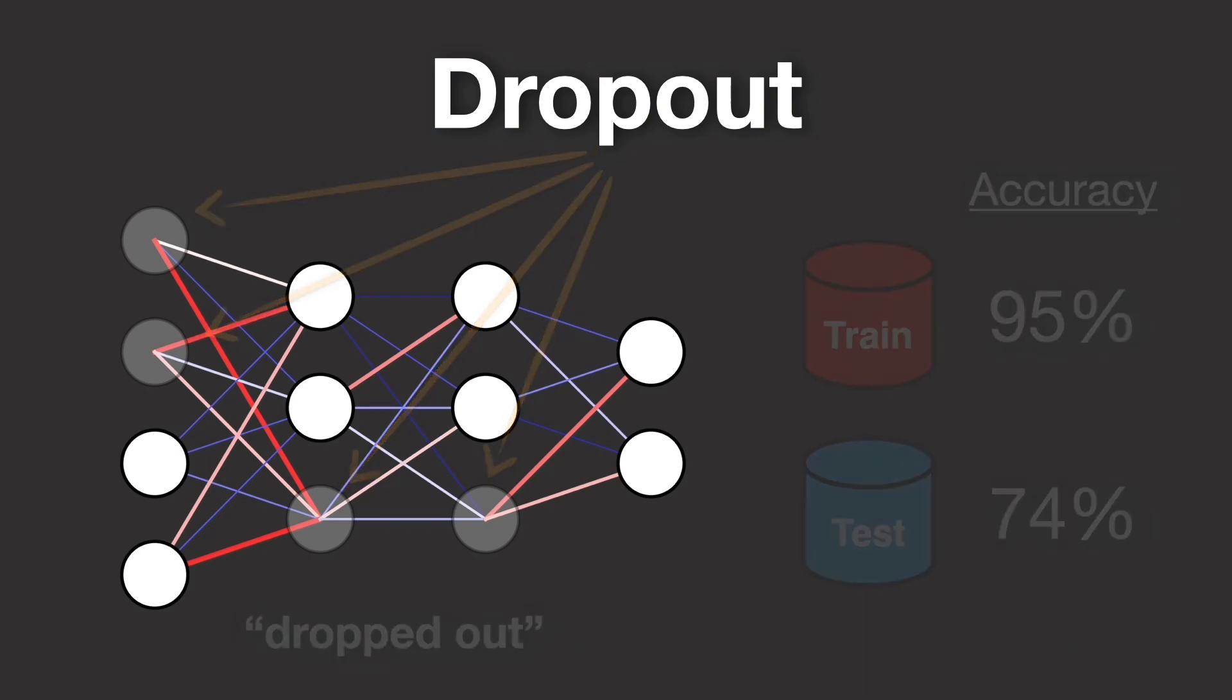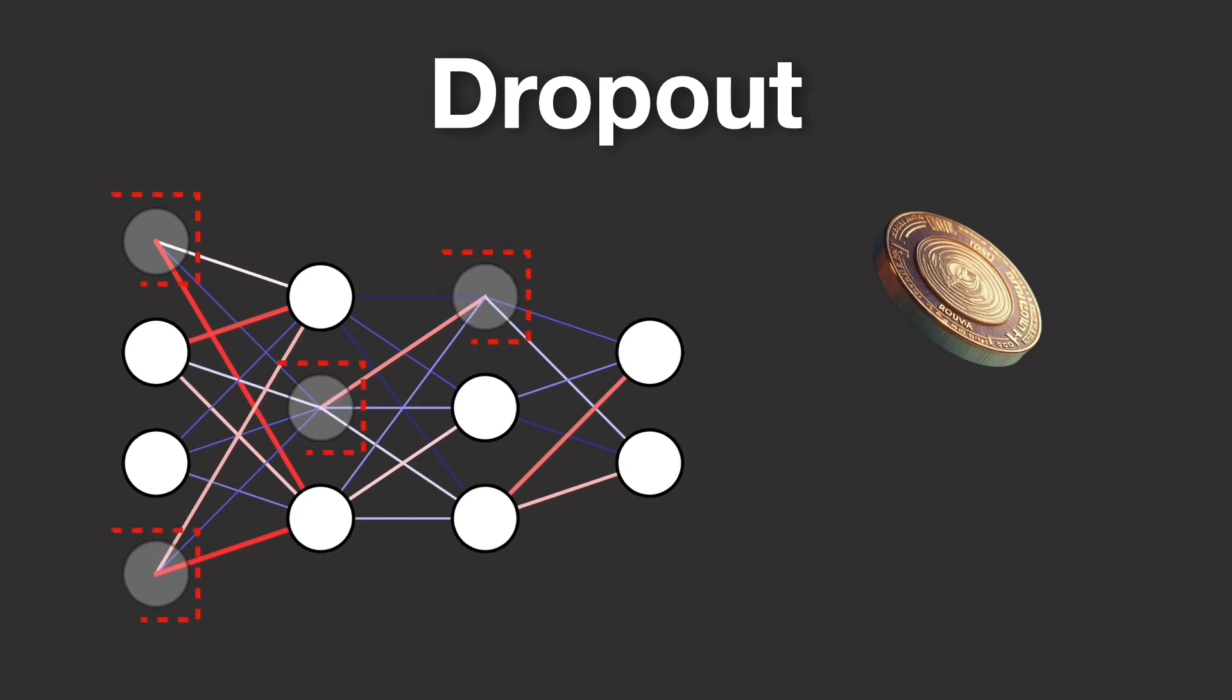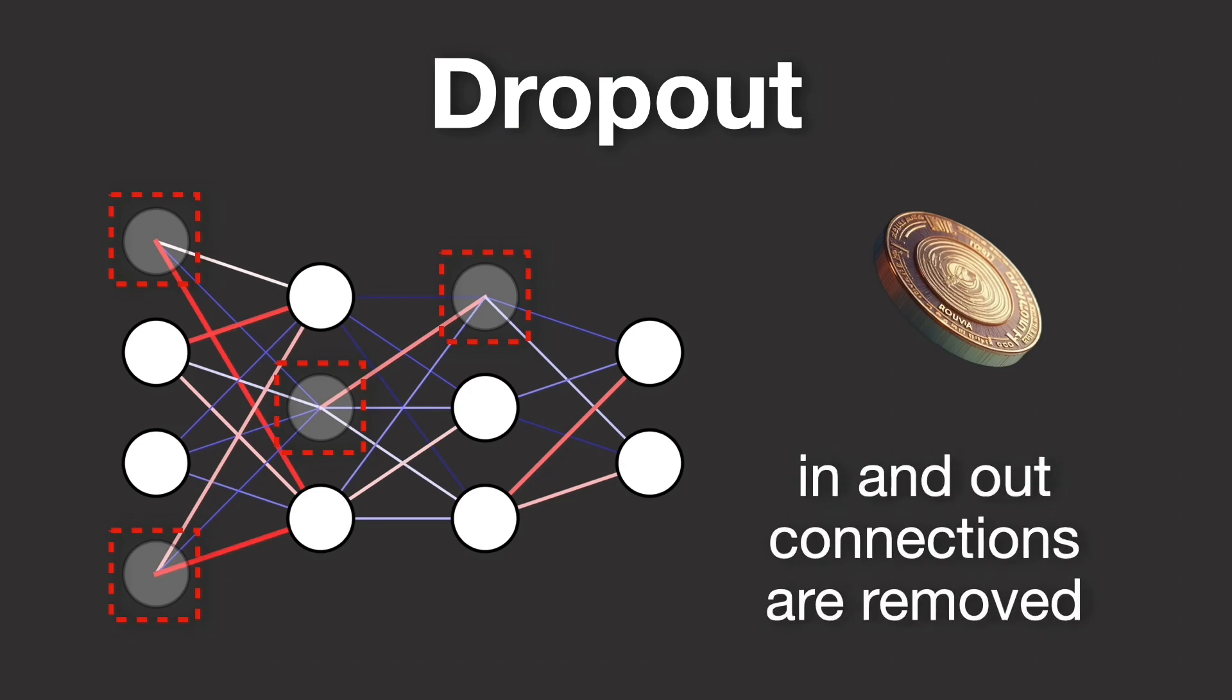Think of it like flipping a coin for each neuron. For example, you might decide that there is a 50% chance a given neuron will be kept and a 50% chance it will be dropped out for that particular training pass. When a neuron is dropped, not only is its output set to zero, but its incoming and outgoing connections are also effectively removed for that iteration.